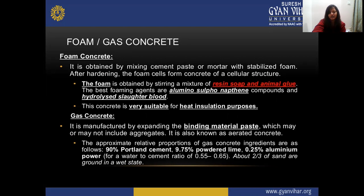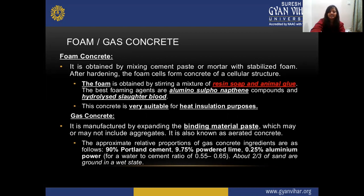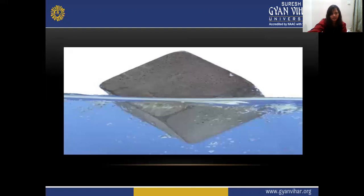Gas concrete (also known as aerated concrete) is manufactured by expanding the binding material paste, which may or may not include aggregates. The approximate proportions are: 90% Portland cement, 9.75% powdered lime, and 0.25% aluminum powder, with a water-to-cement ratio of 0.55 to 0.65 and about 2/3 of sand ground in wet state. Due to entrained air, it has a tendency to float in water.